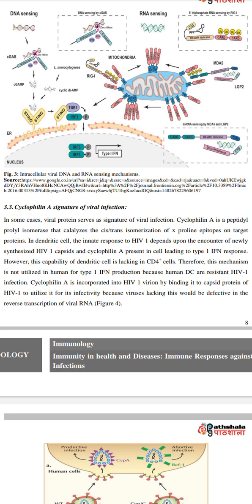Cyclophilin A is a peptidyl-prolyl isomerase that catalyzes the cis-trans isomerization of proline epitopes on target proteins. In dendritic cells, the innate response to HIV-1 depends upon the encounter of newly synthesized HIV-1 capsids and cyclophilin A present in the cell, leading to a type 1 IFN response. However, this capability of dendritic cells is lacking in CD4+ cells.